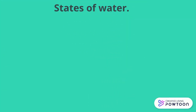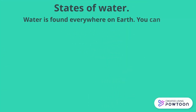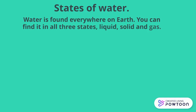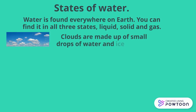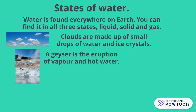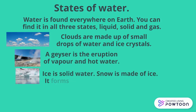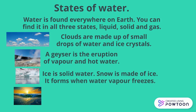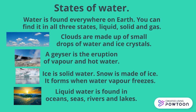States of water. Water is found everywhere on Earth. You can find it in all three states: liquid, solid, and gas. Clouds are made up of small drops of water and ice crystals. A geyser is the eruption of vapor and hot water. Ice is solid water. Snow is made of ice — it forms when water vapor freezes. Liquid water is found in oceans, seas, rivers, and lakes.